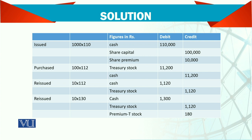Because you bought back 100 shares at Rs. 112 each, the entry is: Treasury Stock (Trade Stock) debit, and Cash credit for Rs. 11,200. You debit trade stocks and credit cash for the payment of Rs. 11,200.